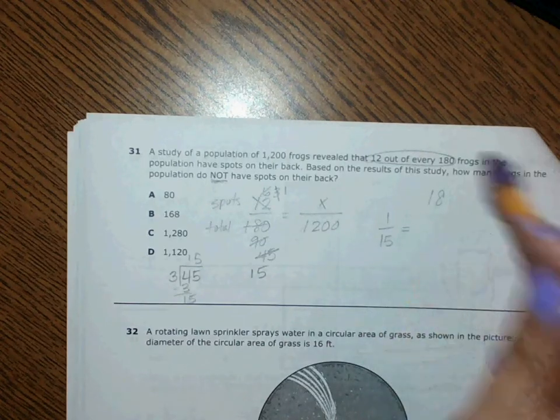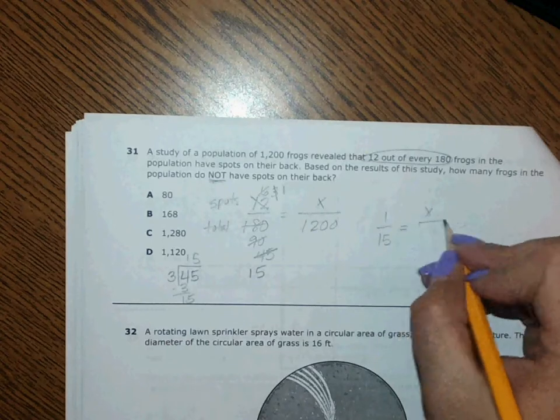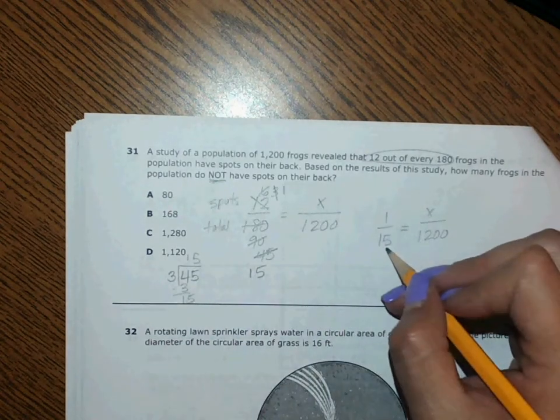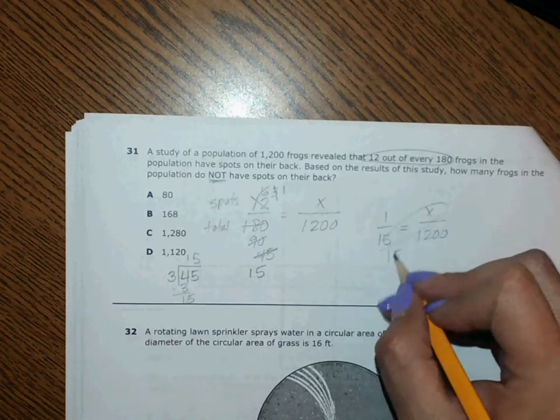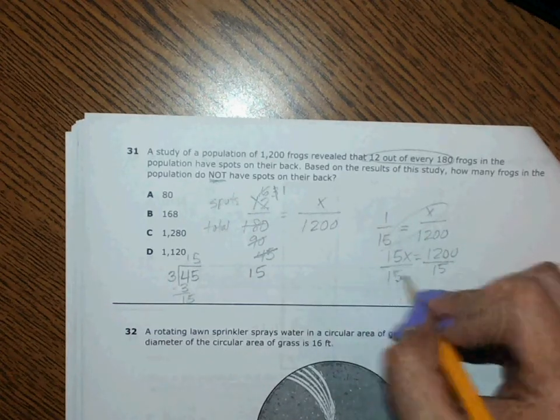One over 15 equals—let me erase this guy—x over 1,200. All right, so here I'm going to multiply because I don't know the scale factor. 15x equals 1,200. Last step, divide by 15. So I'm going to go ahead and do this work: 1,200 divided by 15.